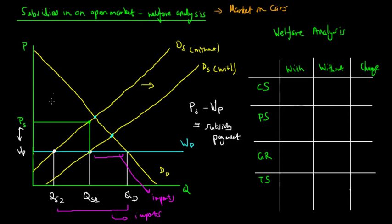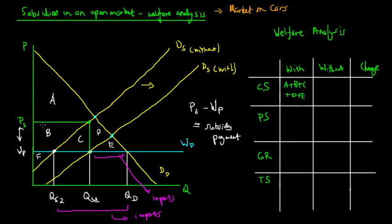Now we apply welfare analysis, labeling the blocks A, B, C, D, E, and F. With the subsidy, consumer surplus is A + B + C + D + E, since consumers are willing to purchase at anything above the world price. Producer surplus is B + F, as producers are effectively receiving price PS, protected by the government subsidy.